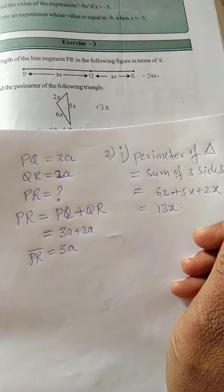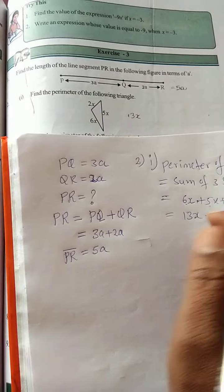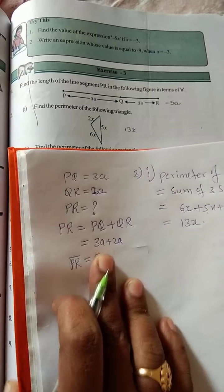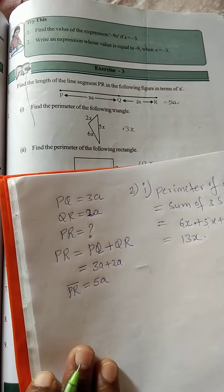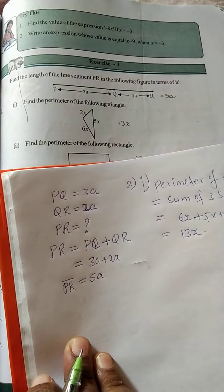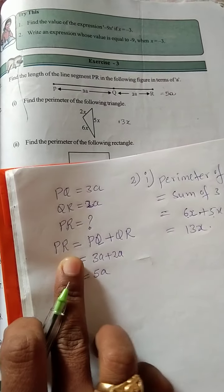Adding the like terms: 6x is the perimeter of the triangle.